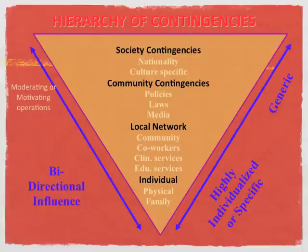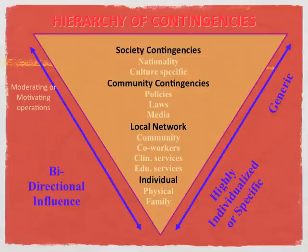The California Tobacco Control Program was really an effort that went both directions — very bi-directional. There were policies that influenced communities, influenced local networks, and ultimately the individual to not smoke or to quit smoking. But also, the initiation of the legislation and policies at the society level were really the result of individual efforts. Individuals who were tired of smelling second-hand smoke and experiencing the effects of smoking organized into grassroots groups and moved up the chain. Local efforts to ban smoking worked their way up. That is really a perfect example of the behavioral ecological model, and I'll talk more about how these levels interact.